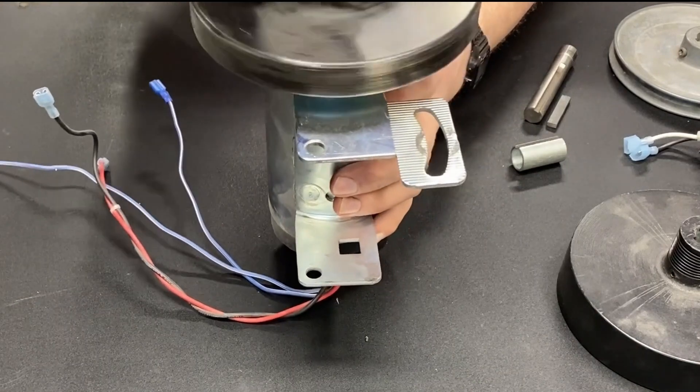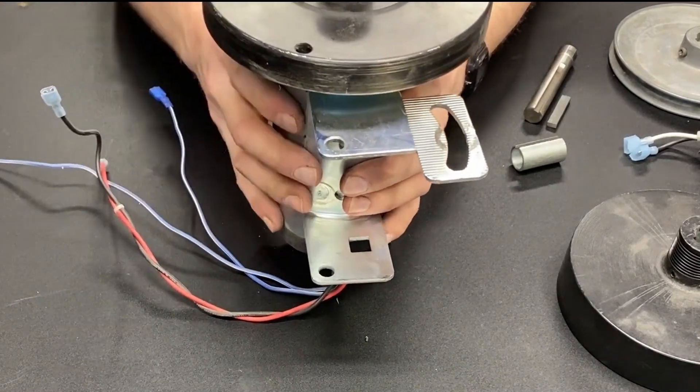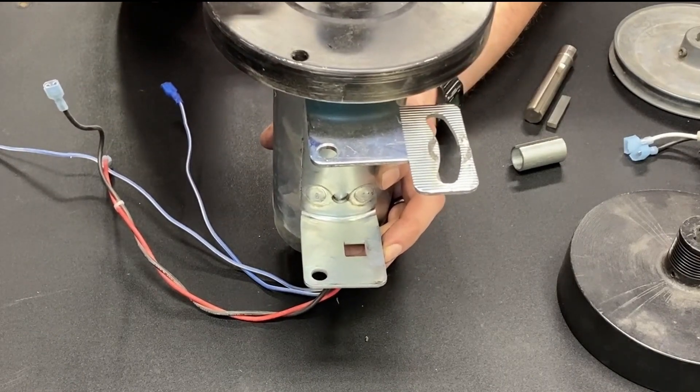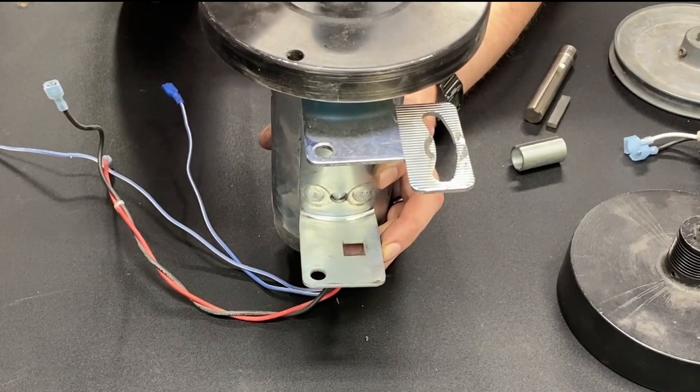That makes hooking up other pulleys somewhat challenging, because the shaft for this motor is threaded. So how do I add a different pulley to it?